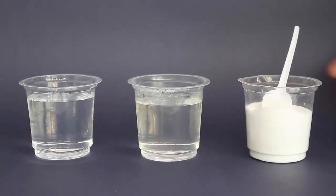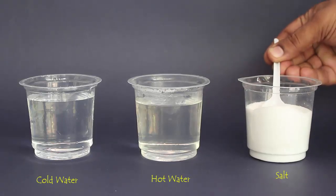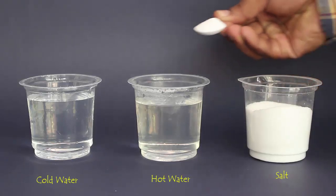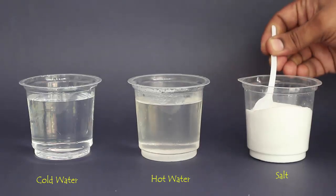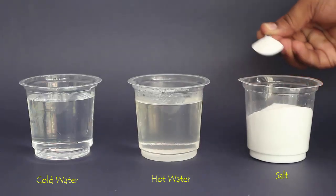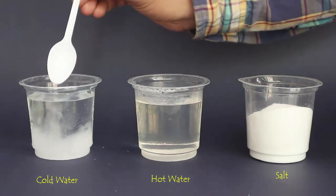Now we will repeat the cold and hot experiment. Instead of sugar, we are going to take salt. Place a teaspoon of salt in both the hot and cold glass.